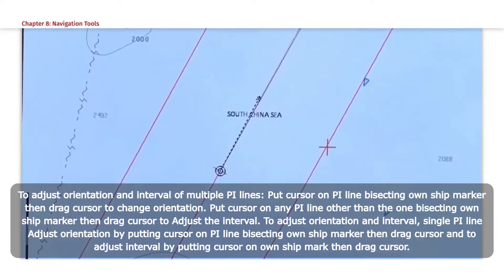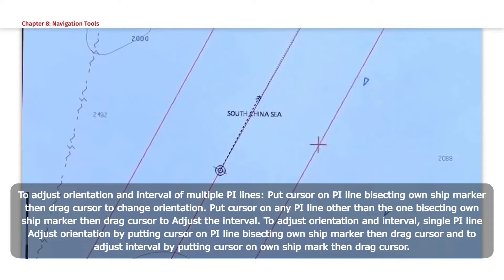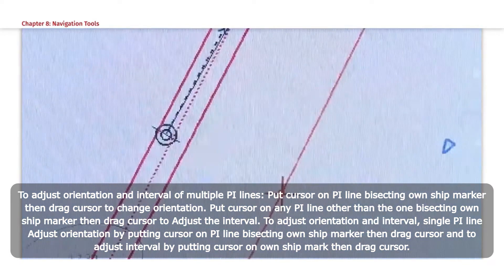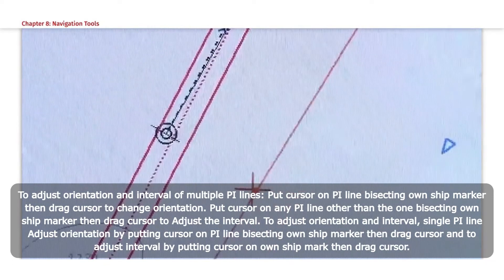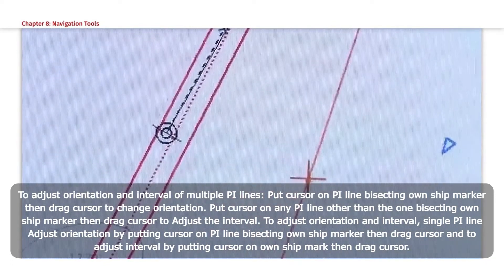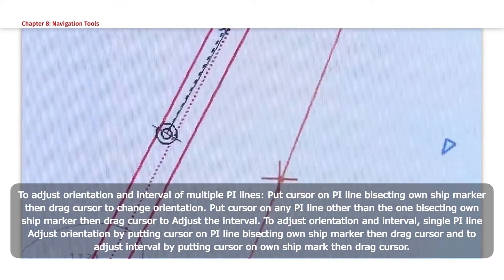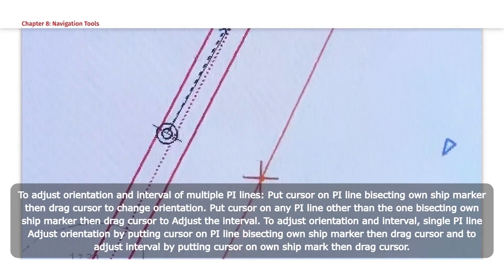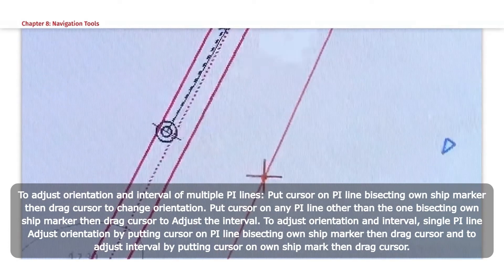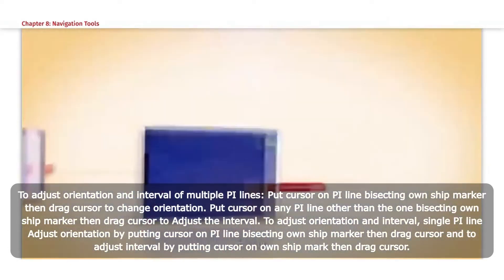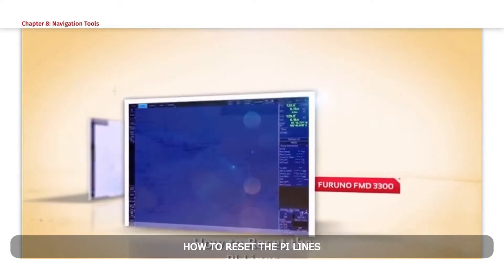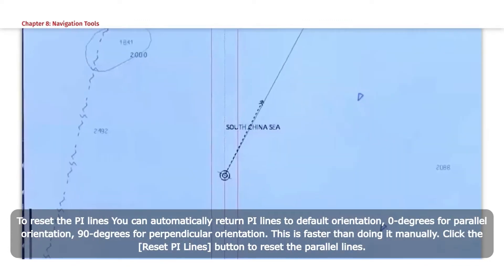Put Cursor on PI Line bisecting Own Ship Marker, then drag Cursor to change orientation. Put Cursor on any PI Line other than the one bisecting Own Ship Marker, then drag Cursor to adjust the interval. To adjust orientation and interval for a single PI Line, adjust orientation by putting Cursor on PI Line bisecting Own Ship Marker, then drag Cursor. To adjust Interval, put Cursor on Own Ship Marker, then drag Cursor.